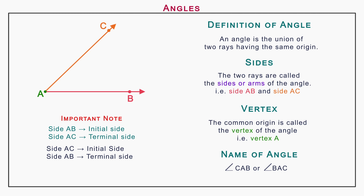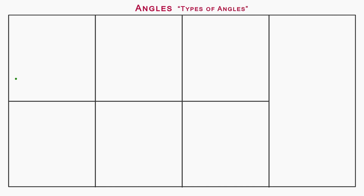One more important note: initial side means fixed side and terminal side means rotating side. Let us now learn types of angles. Take two rays, one magenta coloured and the other orange coloured. The magenta coloured ray will be called the fixed ray or initial ray, and the orange coloured ray will be called the rotating ray or terminal ray. Now keep the rays upon each other. Name the common origin as vertex A. The magenta coloured ray is named as ray AB and the orange coloured ray is named as ray AC.